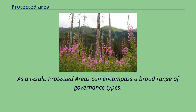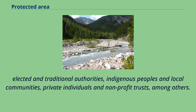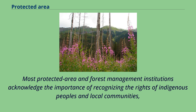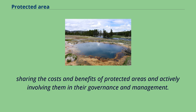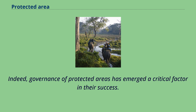As a result, protected areas can encompass a broad range of governance types. A wide variety of rights holders and stakeholders are involved in the governance and management of protected areas, including government agencies and ministries at various levels, elected and traditional authorities, Indigenous peoples and local communities, and private individuals and non-profit trusts. Most protected area institutions acknowledge the importance of recognizing the rights of Indigenous peoples and local communities, sharing costs and benefits, and actively involving them in governance. This has led to recognition of four main types of governance, defined by who holds authority, responsibility, and accountability for key decisions.